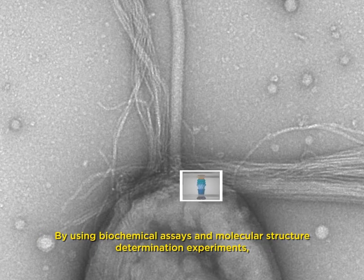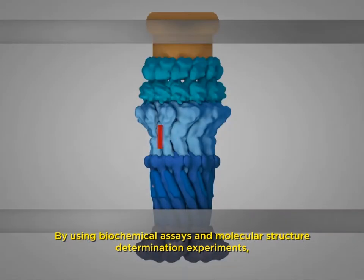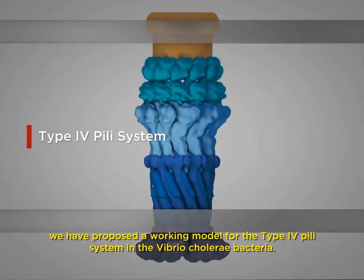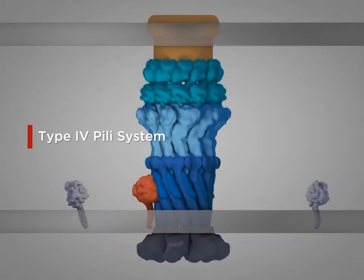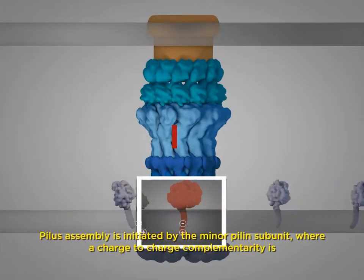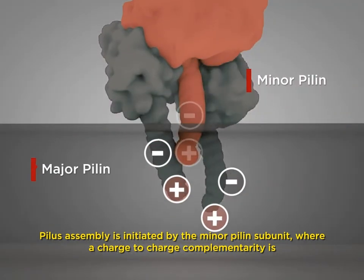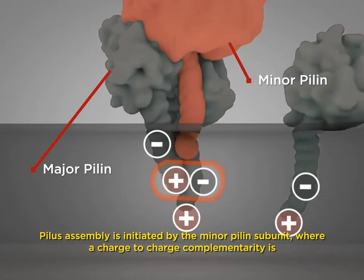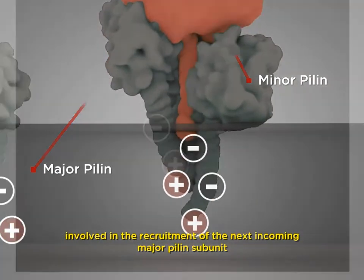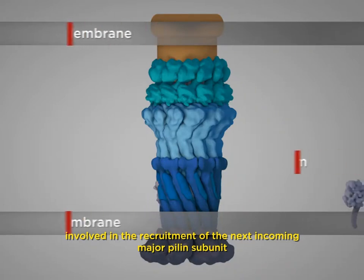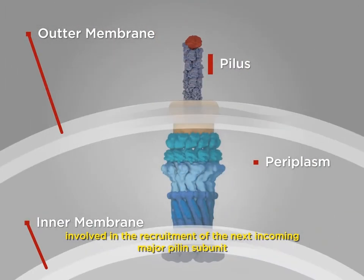By using biochemical assays and molecular structure determination experiments, we have proposed a working model for the Type IV pilus system in the Vibrio cholerae bacteria. Pilus assembly is initiated by the minor pillin subunit, where a charge-to-charge complementarity is involved in the recruitment of the next incoming major pillin subunit.